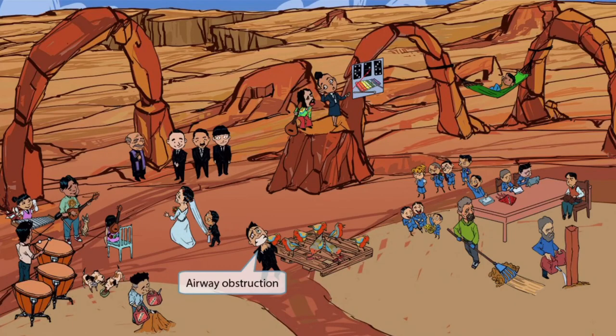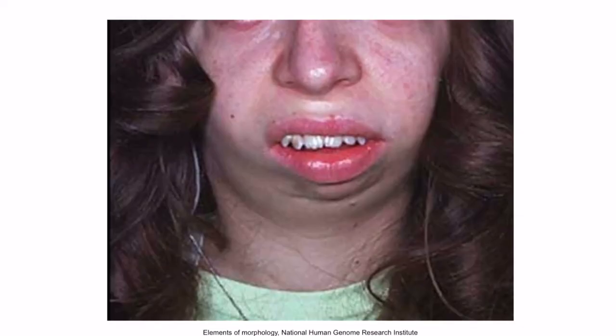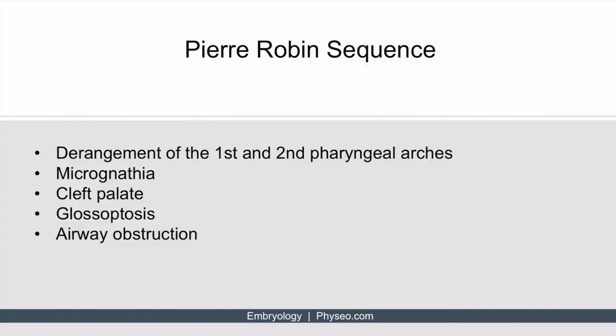We've added one of the groomsmen near the birds. He was innocently admiring the birds when he began to have an allergic reaction — he's deathly allergic to Robins and now he can't breathe. The fact that he's holding his throat should help you remember that Pierre-Robin sequence is associated with airway obstruction. Here is a picture of a patient with Pierre-Robin sequence. To summarize: Pierre-Robin sequence is caused by derangement of the first and second pharyngeal arches, and presents with micrognathia, cleft palate, glossoptosis, and airway obstruction.